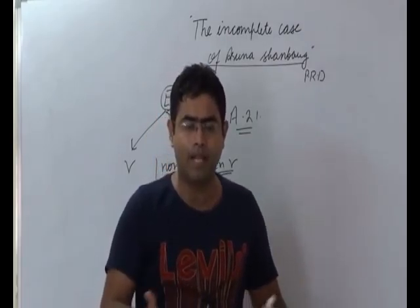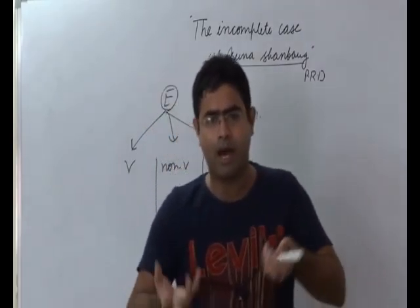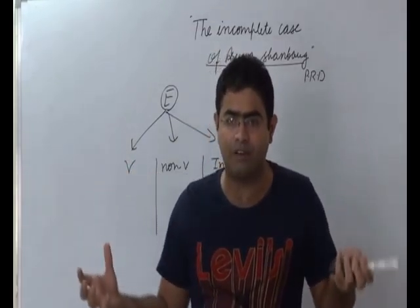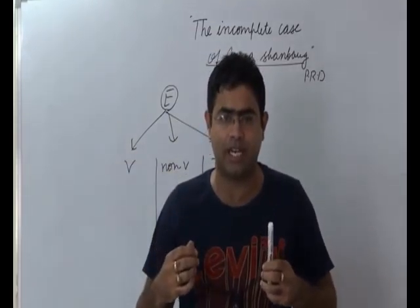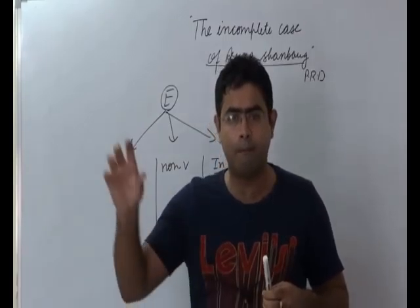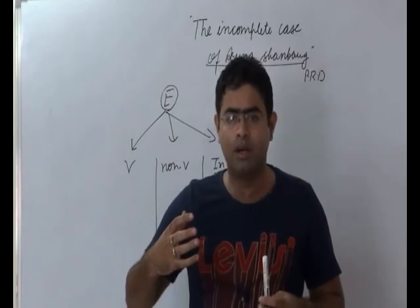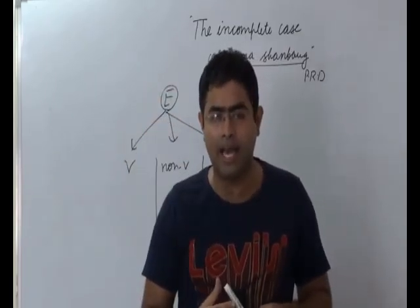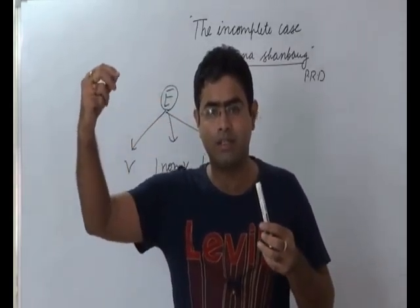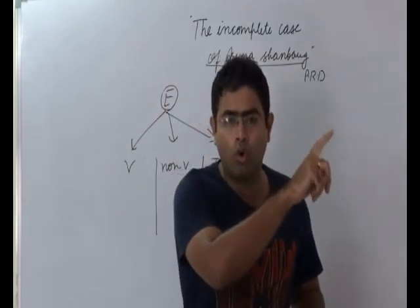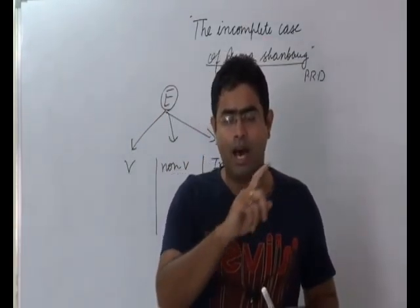Suppose I am not able to perform my regular life functions, I am in a vegetative state. In that condition, my near or dear ones, my relatives, my family members, they will go to a High Court requesting that passive euthanasia should be administered to me. In that case, the High Court will appoint two judges.